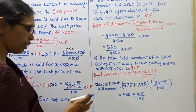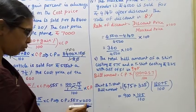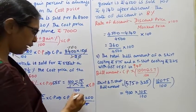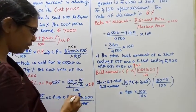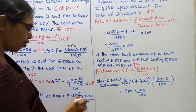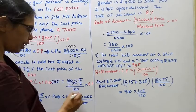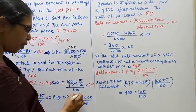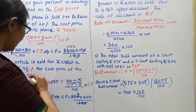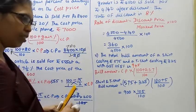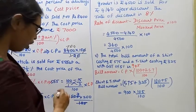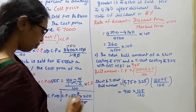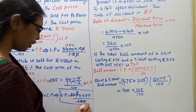This sum is easy to do. 185 — 3 times cancel. 185 into 3 is 555. 3 into 200 is 600. Cost price is Rs. 600.